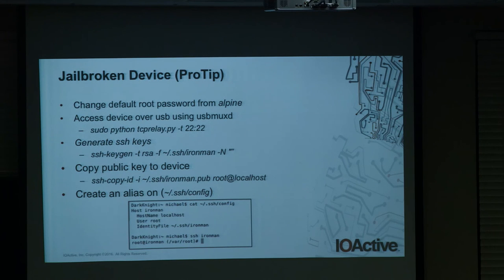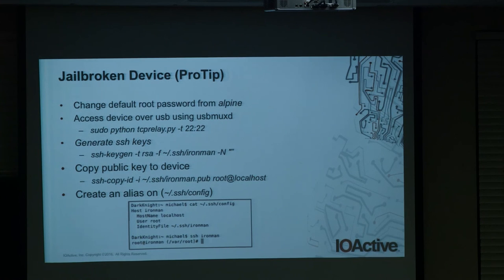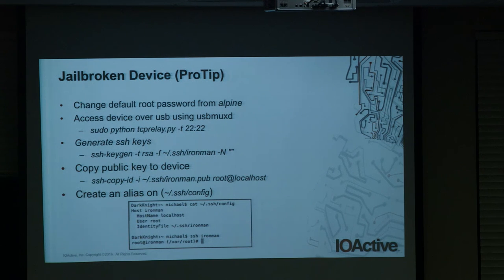Some housekeeping tips: change the default root password from 'alpine.' Access the device over USB using usbmuxd — run the TCP relay command, listen on port 22, and forward traffic to the device. Use SSH keys: generate your key pair and copy the public key to the device. Create an alias for the device so you can simply SSH into it by name. This approach beats typing in a password every time and dealing with IP addresses.